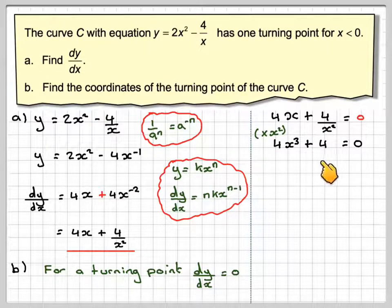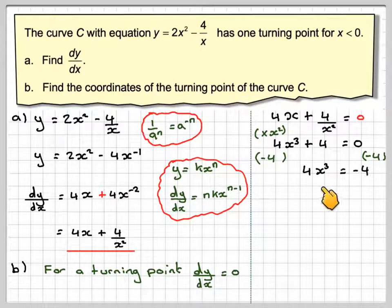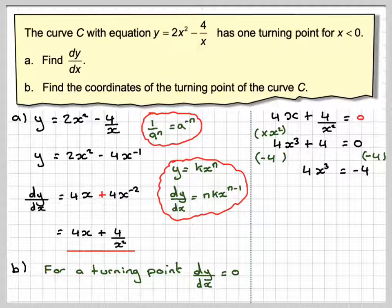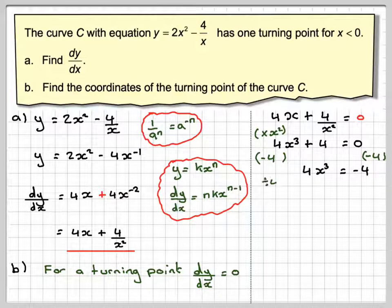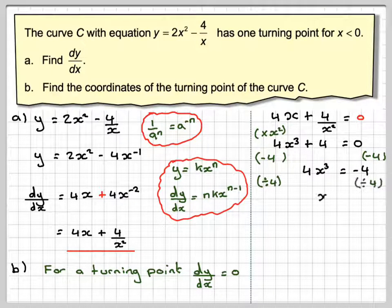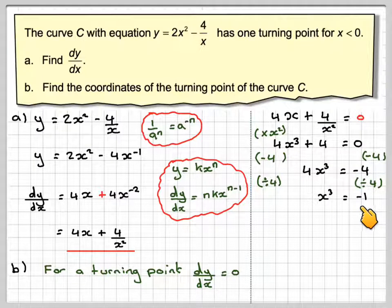4 over x squared times x squared will just give plus 4, and 0 times anything equals 0. This is much easier to solve, so if we take 4 from both sides, we get 4x cubed equals minus 4. If we divide both sides by 4, we get x cubed equals minus 1.